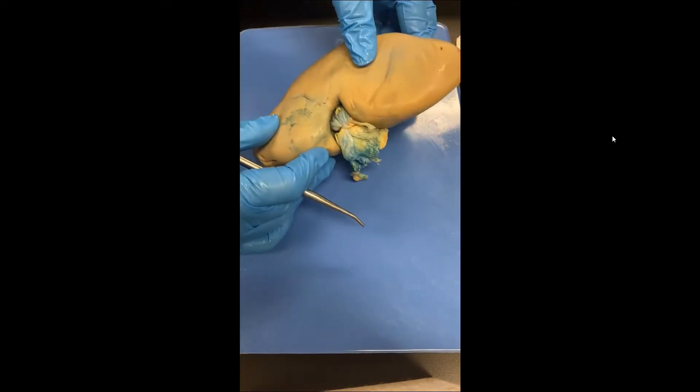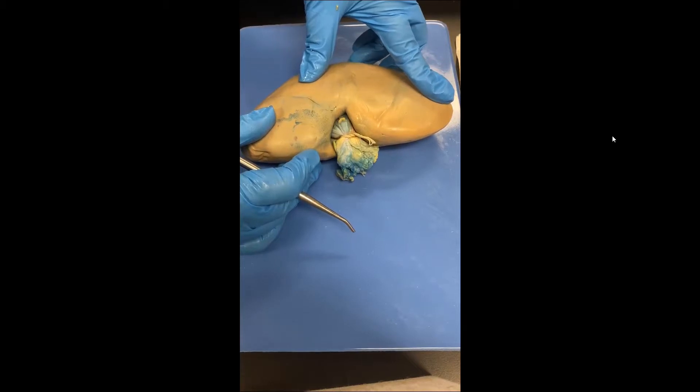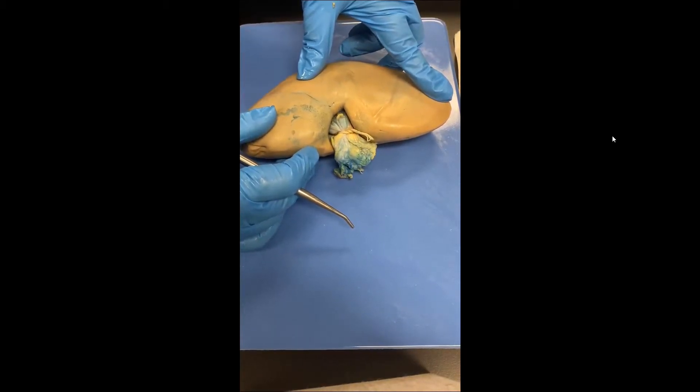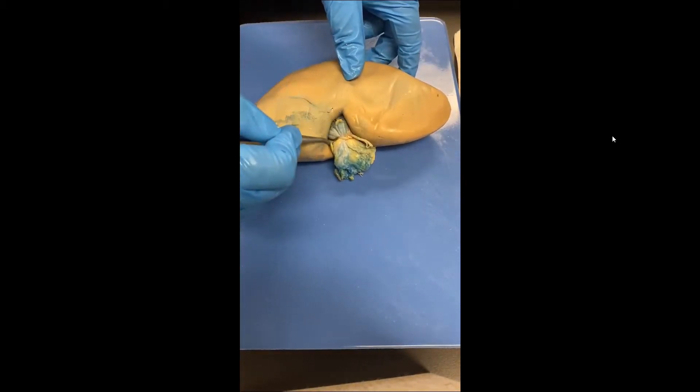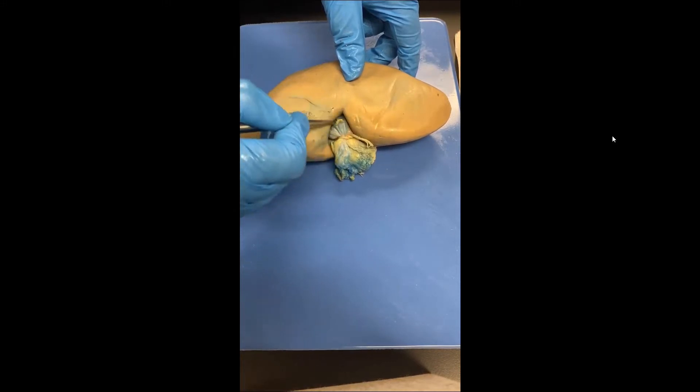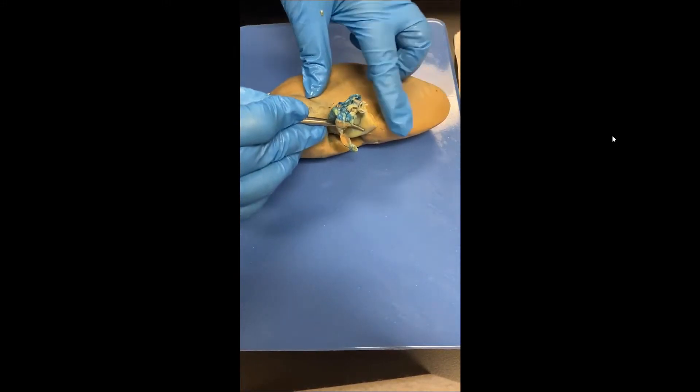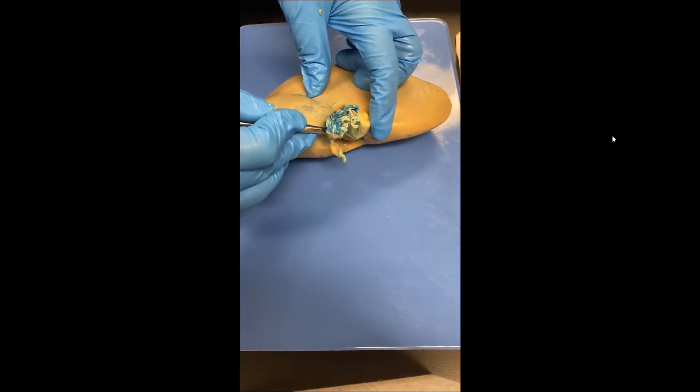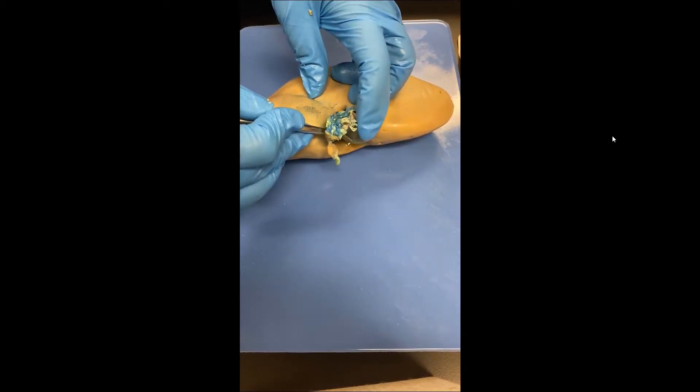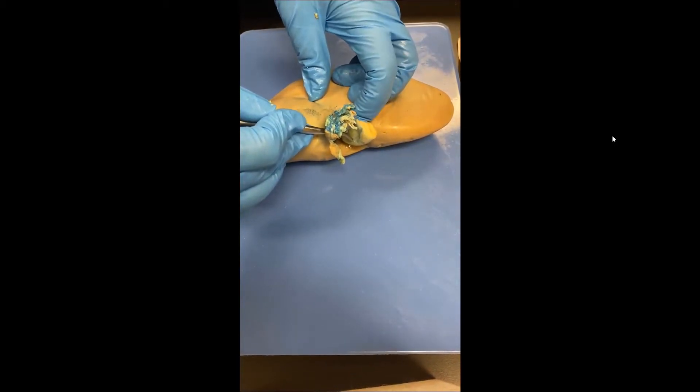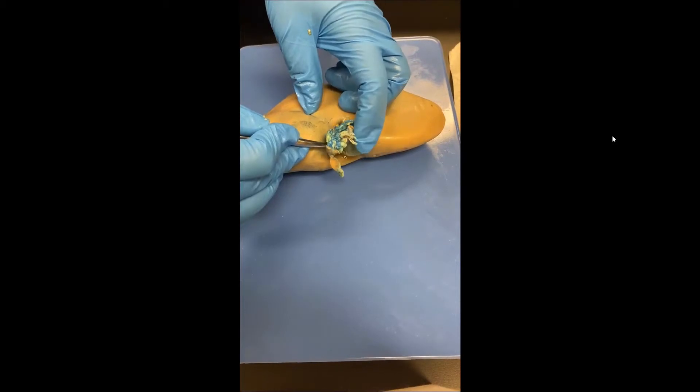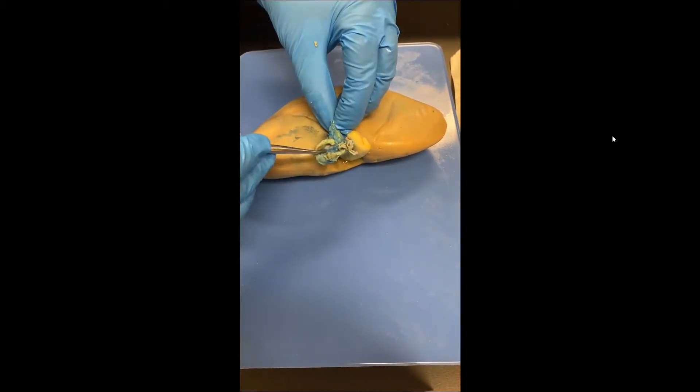So this would sit in the body in the retroperitoneal space, retro for behind. This little notch here in the kidney, this little part right here where structures come in and out, this is called the hilus. It's also called the hilum. If you wrote hilus H-I-L-U-S or hilum H-I-L-U-M, either one would count.